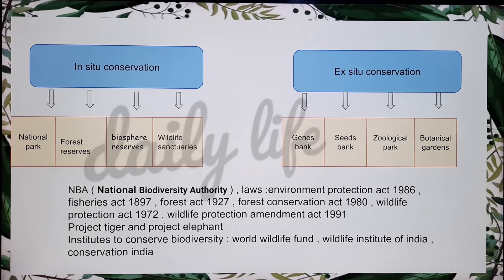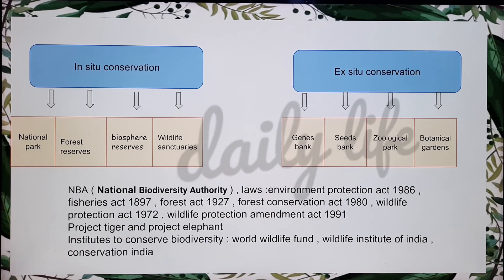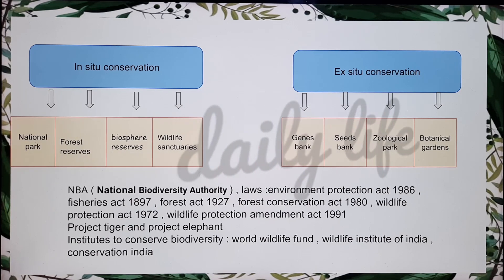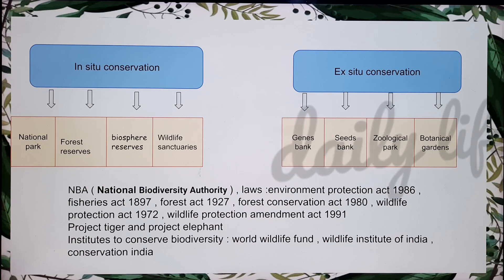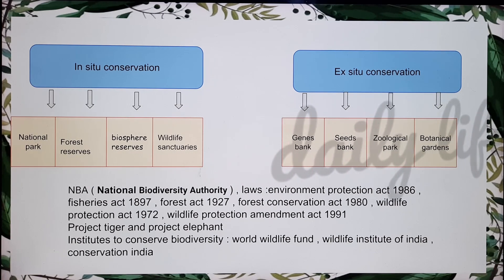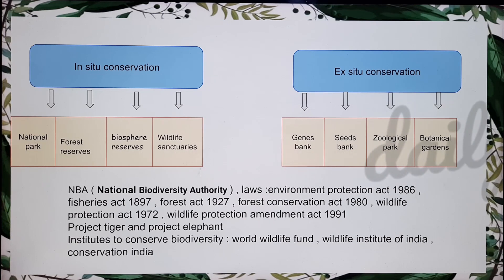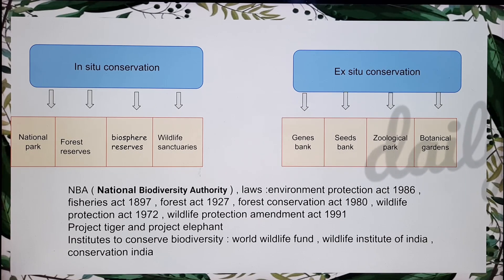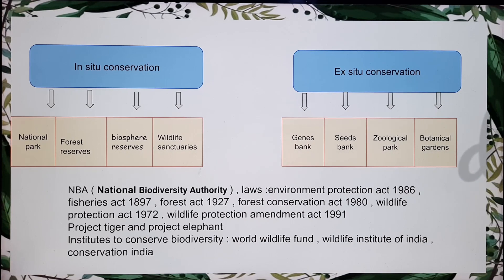There are also two major projects: Project Tiger and Project Elephant. Project Tiger is mainly to ensure that tigers — the national animal of India — do not become extinct. There are also many organizations that take care of the conservation of biodiversity, like the Wildlife Institute of India, Wildlife Protection Society of India, World Wildlife Fund (WWF), Nature Conservation Foundation, People for Animals, and Conservation India.